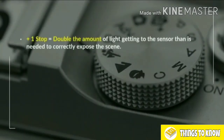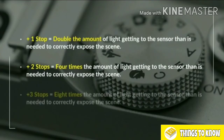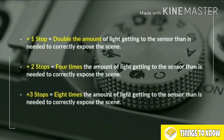To break that down: plus 1 stop means double the amount of light is coming into the scene — more than is needed to correctly expose it. Plus 2 stops means four times the amount of light, which would be very overexposed. And plus 3 stops — since 1 stop is double and 2 stops is four times — 3 stops is eight times the amount of light. That's a huge amount of light, and our image would be very overexposed. Similarly, if it was plus 4 stops, it would be 16 times the amount of light.